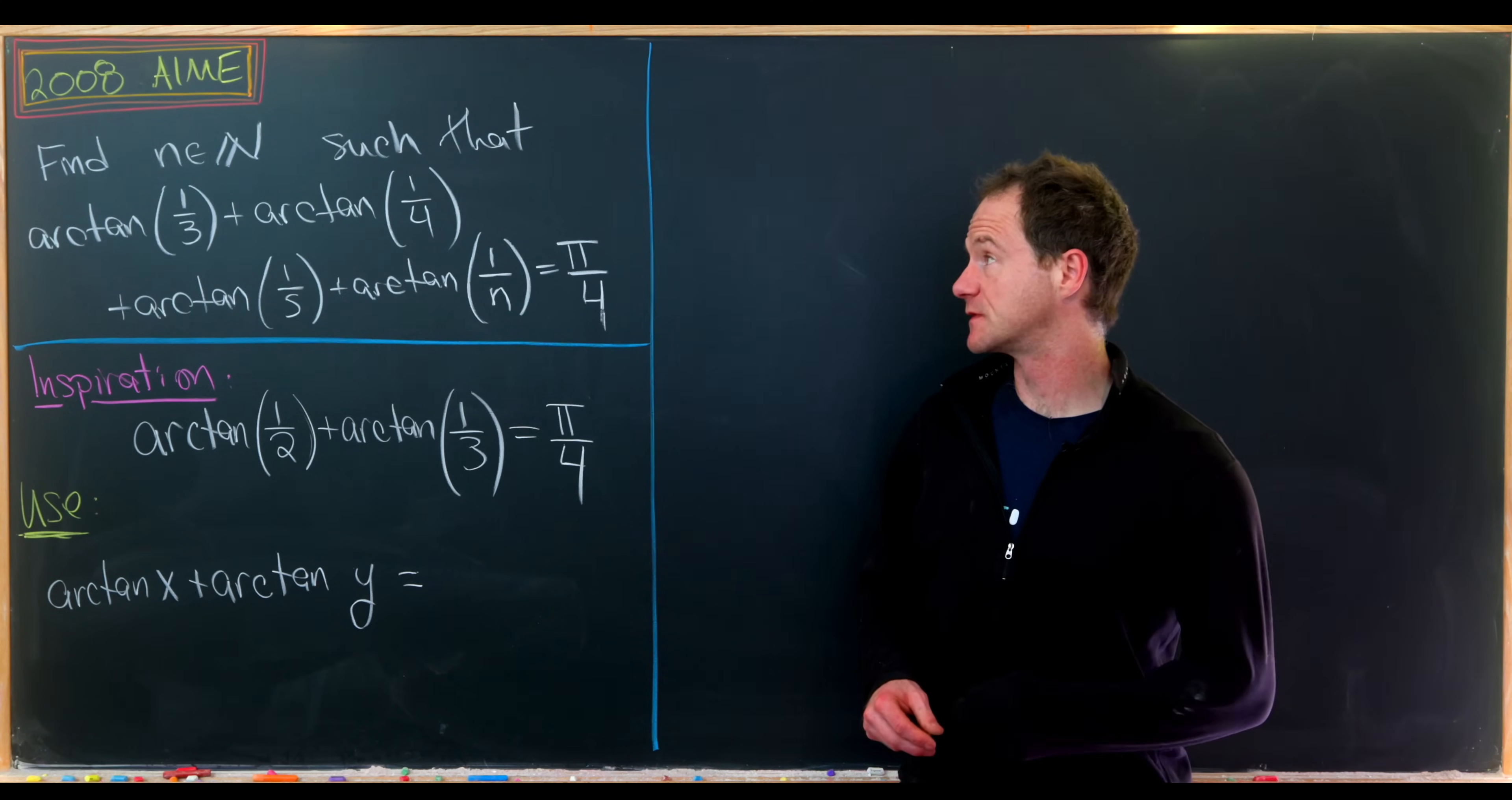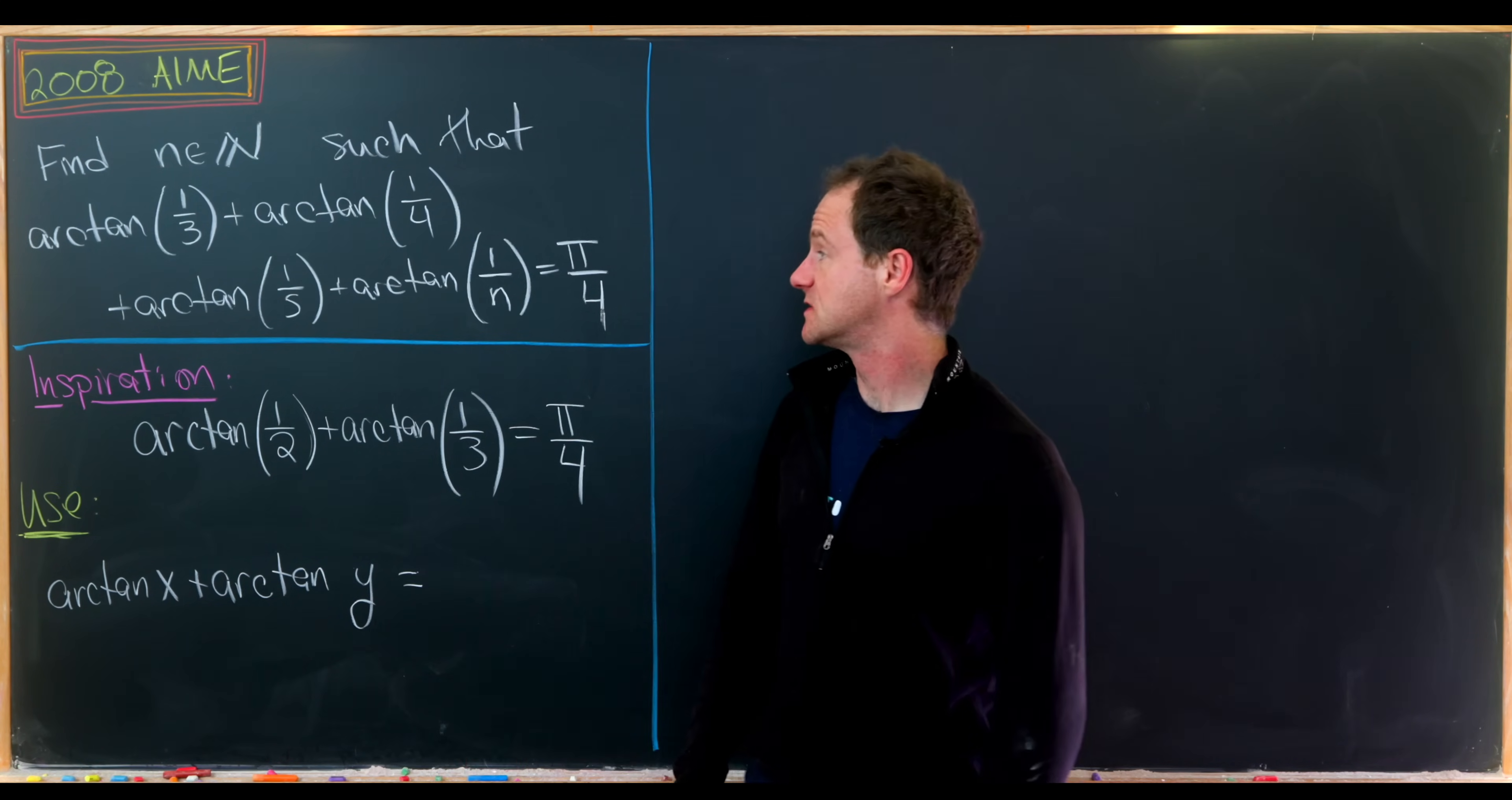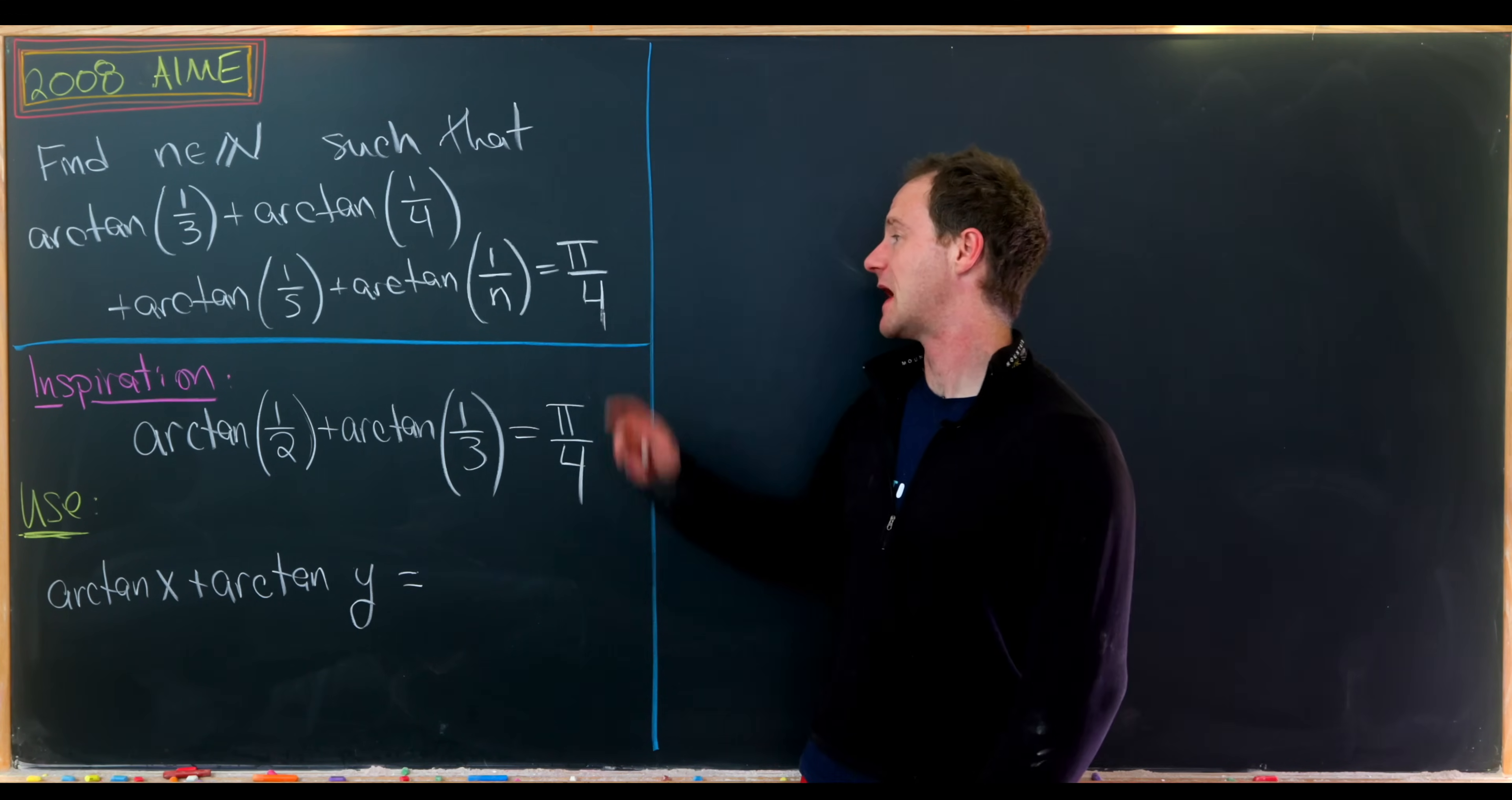Today I've got a really nice problem that comes from the 2008 American International Math exam. Our goal is to find natural number n such that arctan(1/3) + arctan(1/4) + arctan(1/5) + arctan(1/n) equals π/4.